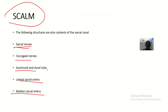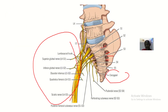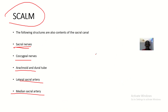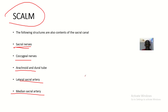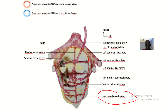Then we have arachnoid and dural tube, which are not shown here, but they actually show up here. Then the lateral sacral artery — this is the lateral sacral artery, which is on the lateral side of the sacrum.